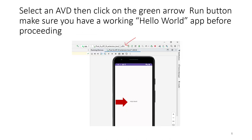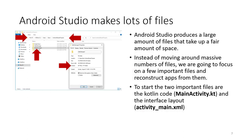Once Gradle is done syncing, choose an AVD from the dropdown list at the top. Next to that dropdown there's a triangular green run button. I'm currently running the app, so it's turned into a curved arrow. We see the emulated phone with the hello world message — we have a functioning hello world project.